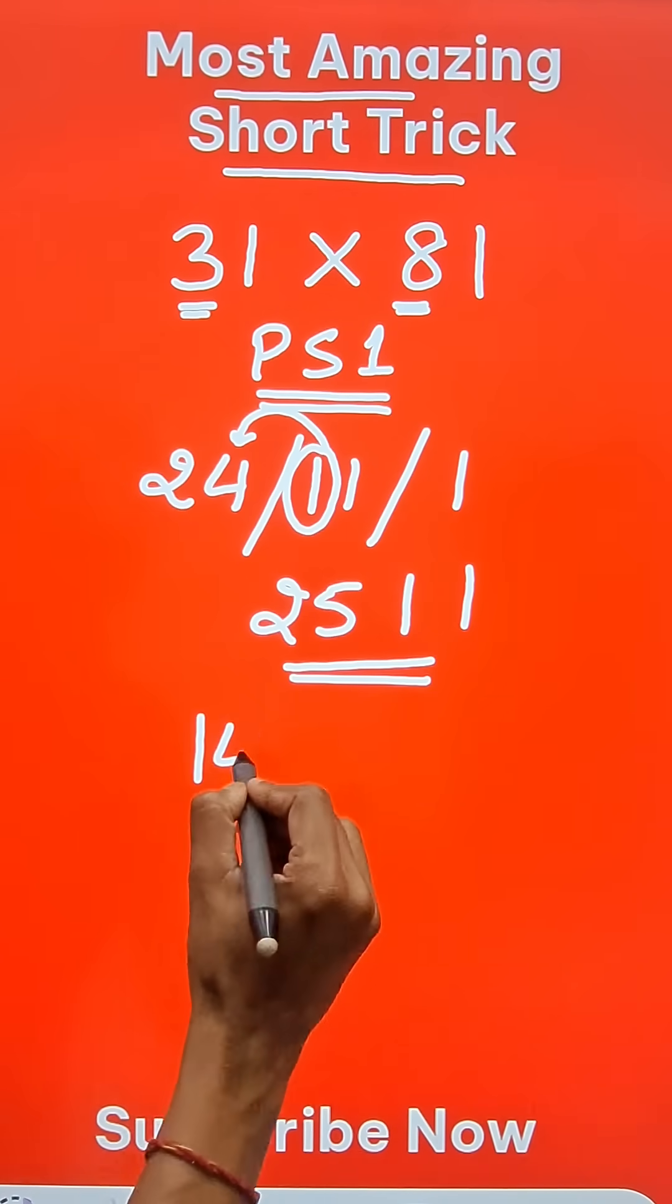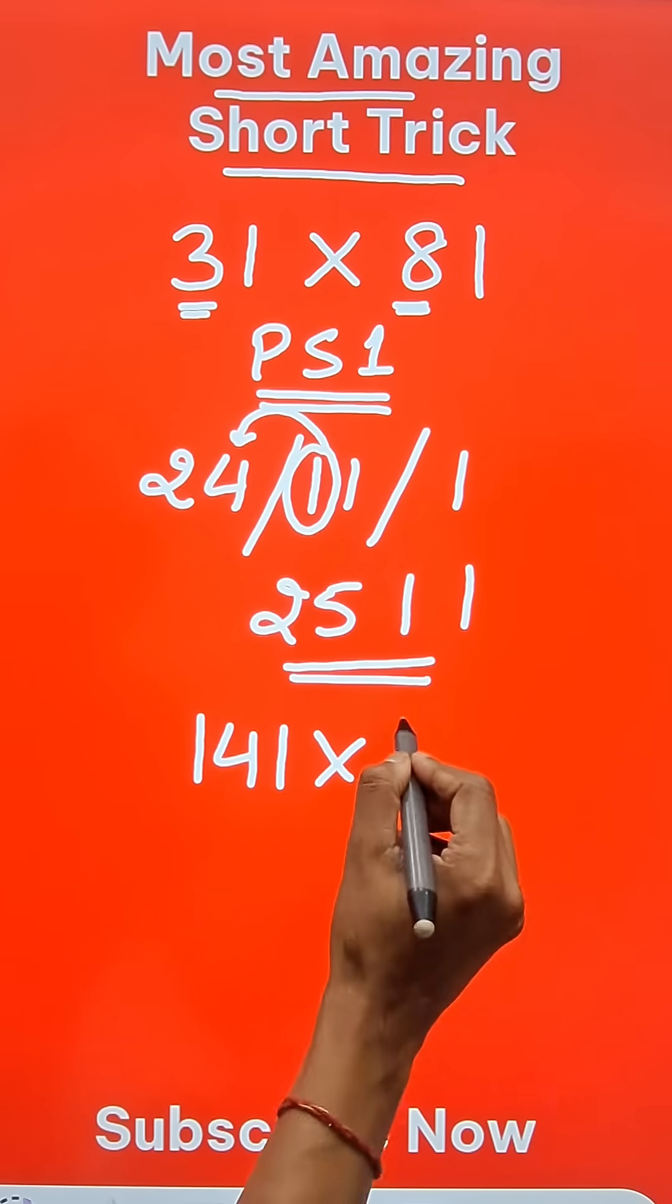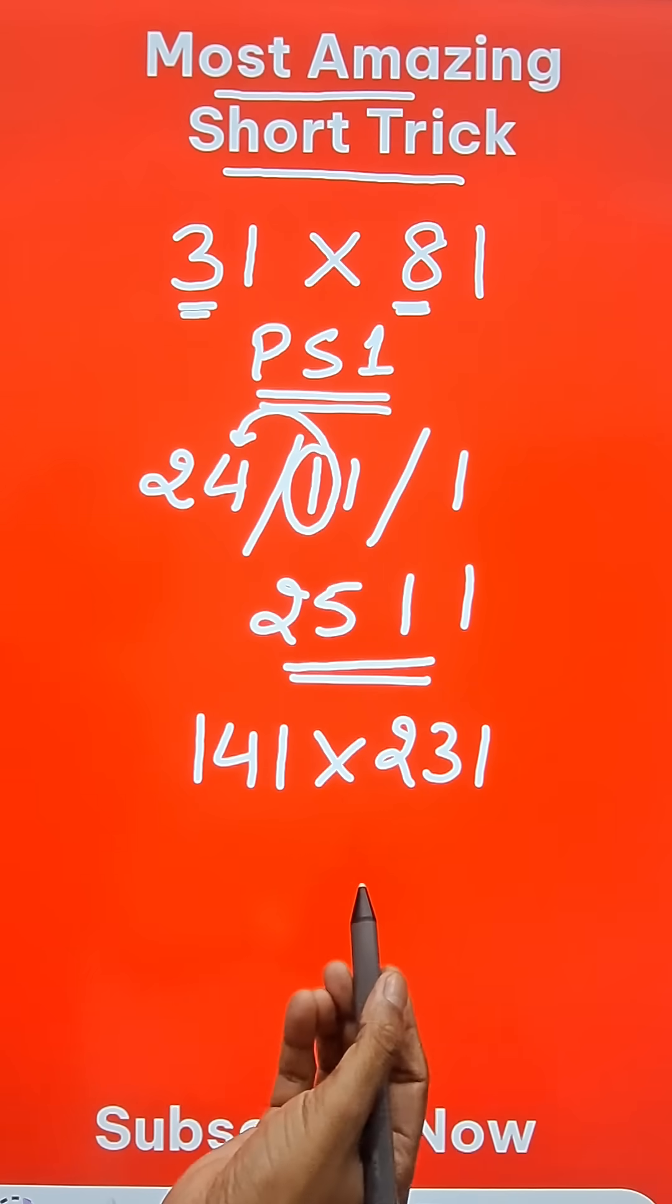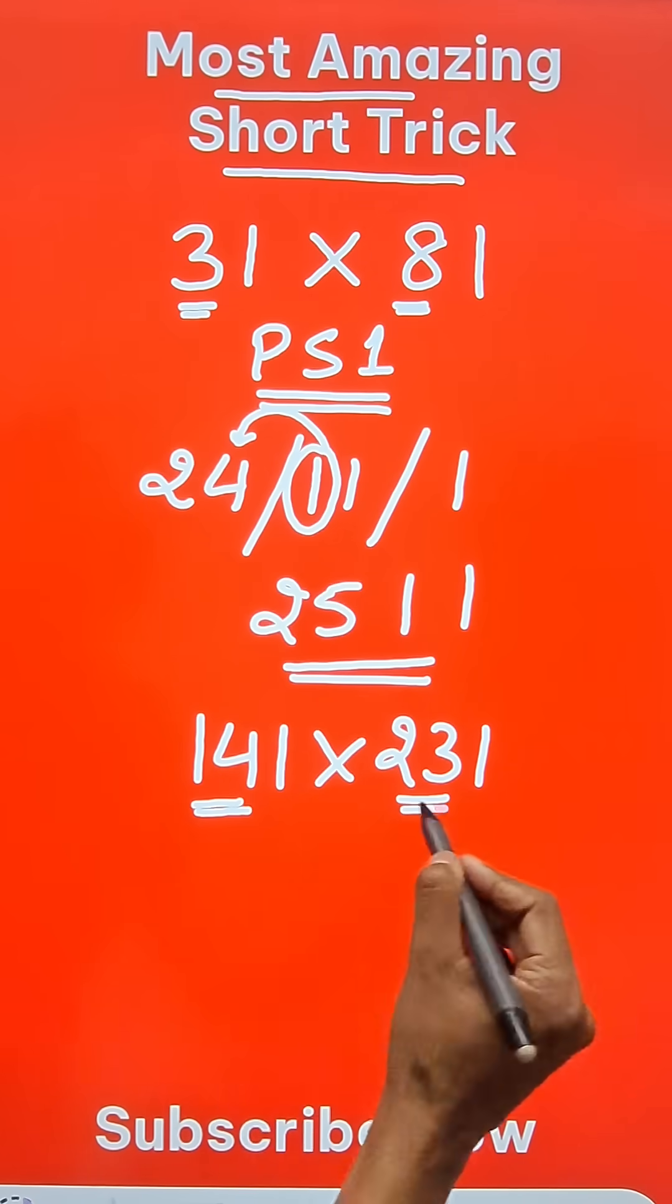If you have 3-digit numbers like 141 times 231, you can still do it using the same approach. Here we have 14 and here you have 23.